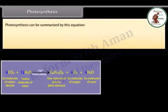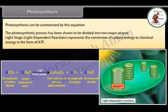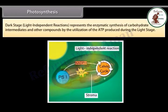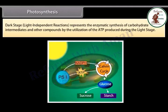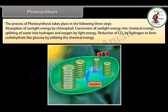Photosynthesis can be summarized by this equation. The photosynthetic process is divided into two major phases: the light stage (light-dependent reactions), which represents the conversion of radiant energy to chemical energy in the form of ATP; and the dark stage (light-independent reactions), which represents the enzymatic synthesis of carbohydrate intermediates and other compounds by the utilization of ATP produced during the light stage. The process of photosynthesis involves: absorption of sunlight energy by chlorophyll; conversion of sunlight energy into chemical energy; splitting of water into hydrogen and oxygen by light energy; and reduction of CO₂ by hydrogen to form carbohydrate like glucose, utilizing the chemical energy.